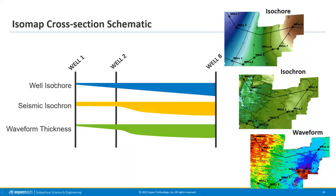From the wells we get highly accurate information at the well locations, but we have to interpolate between them to justify what's happening. With the seismic isochron, we get good spatial distribution information — we can see a non-linear trend in the thinning attribute, but when it gets too thin, we can't tell what's going on. With waveform classification, we get the best of both worlds: we leverage information from the well data with the wedge modeling, and we're able to use the seismic to map out the non-linear thinning of the formation, as well as the thinning aspects within it.